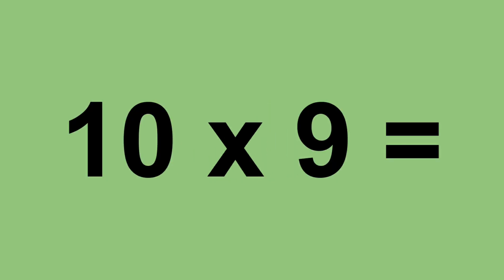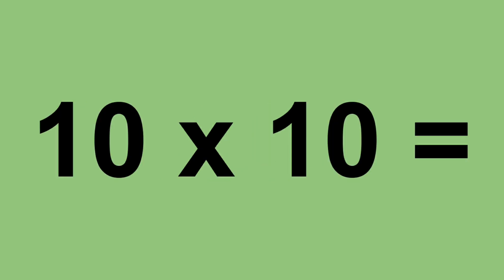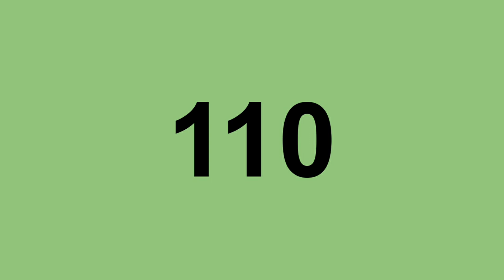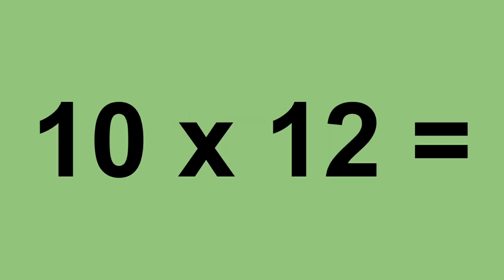Ten times nine equals ninety. Ten times ten equals one hundred. Ten times eleven equals one hundred and ten. Ten times twelve equals one hundred and twenty.